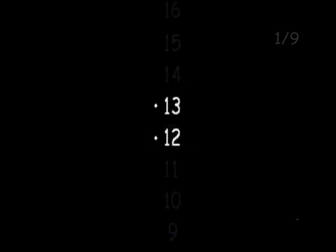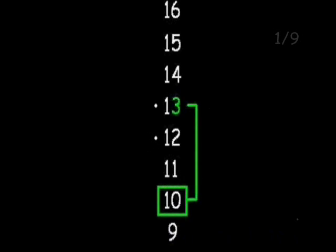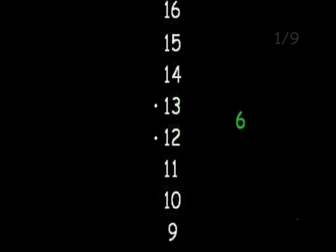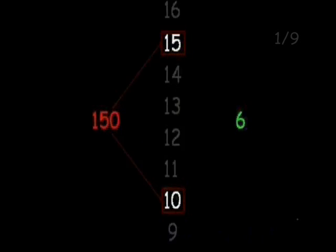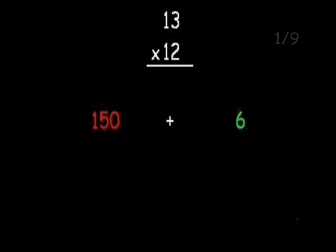First, picture your numbers on a number line. Picture how far away each number is from the closest zero and multiply these together for a green number. You'll combine this with your red number, which you get by stepping out until that closest zero. So instead of 13 times 12, you solve for 15 times 10. So 13 times 12 is 6 more than 150.